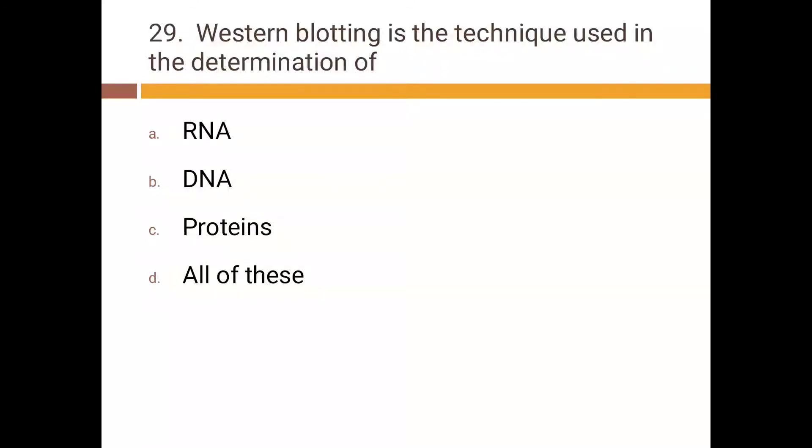Western blotting is the technique used in the determination of: a) RNA, b) DNA, c) proteins, d) all of these. Correct answer is c) proteins.